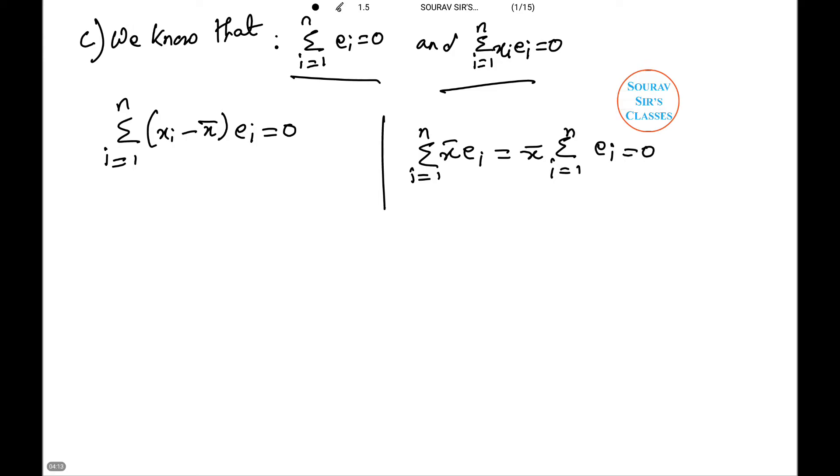We substitute e_i to obtain summation i from 1 to n (x_i minus x bar)(y_i minus a minus b x_i) which equals 0.